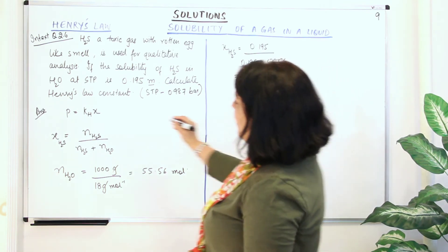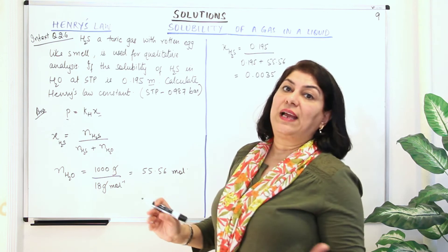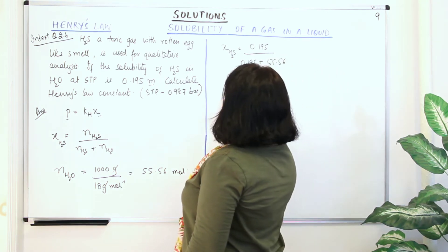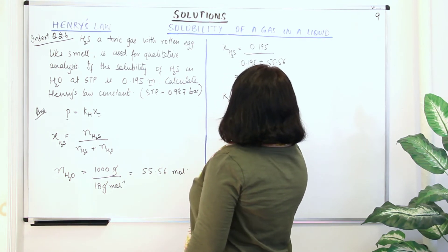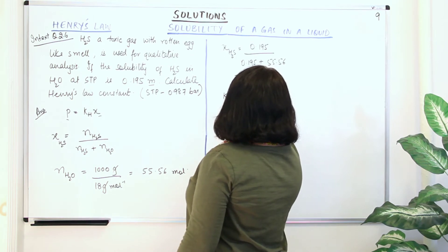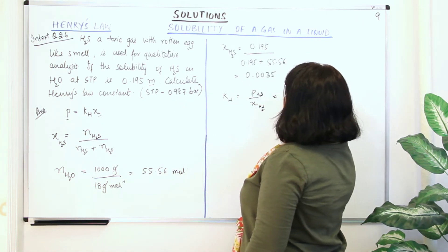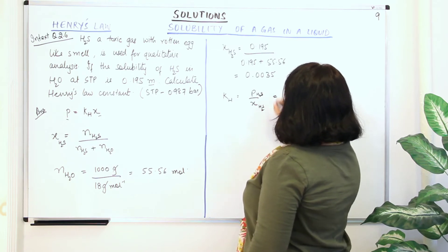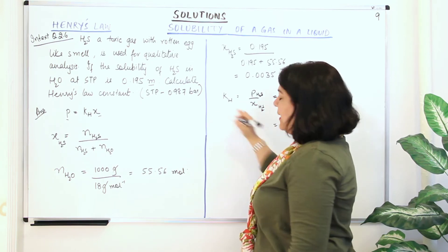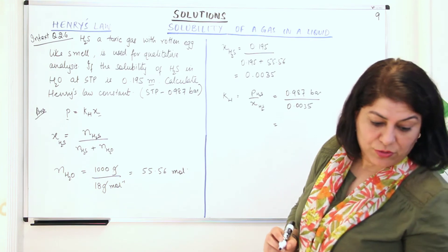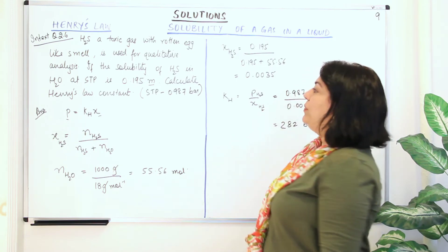Now we have the mole fraction. The partial pressure is 0.987 bar at STP. From Henry's Law, if P = KH·x, then KH = P ÷ x. Partial pressure of H₂S at STP is 0.987 bar divided by x = 0.0035. When you calculate this, KH comes out to be 282 bar.